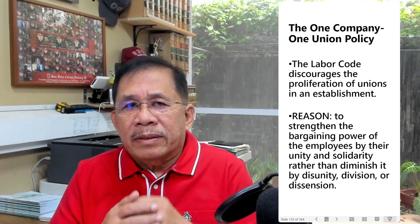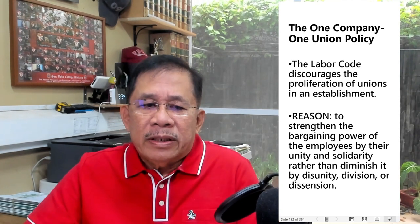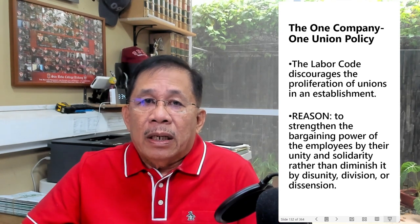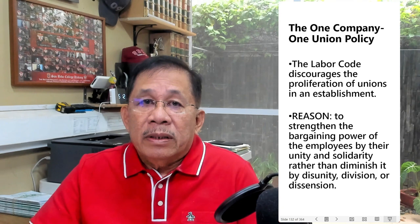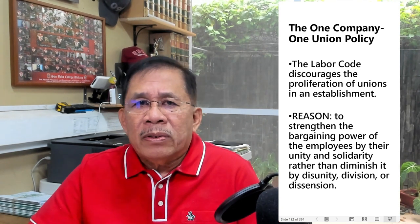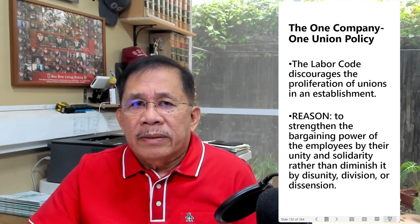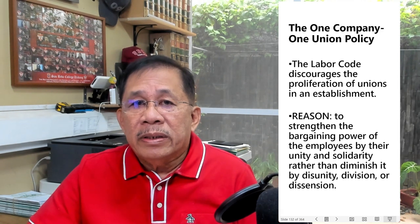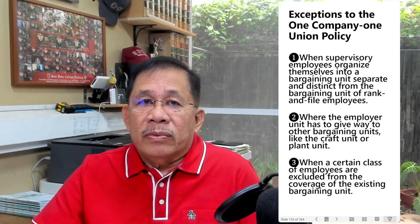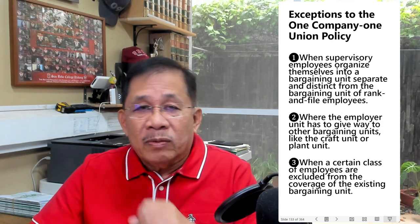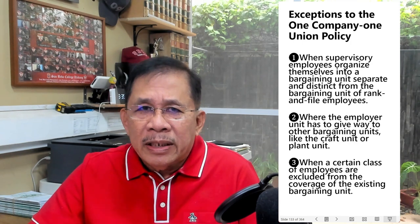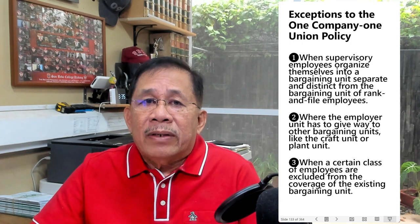The Labor Code discourages the proliferation of unions in an establishment. The general policy is one company, one union, unless the circumstances require otherwise. The reason is to strengthen the bargaining power of the employees by their unity and solidarity, rather than diminish it with disunity, division, or dissension. But the one union, one company policy is subject to exceptions. The first is when supervisory employees organize themselves into a bargaining unit separate and distinct from a unit of rank-and-file employees.